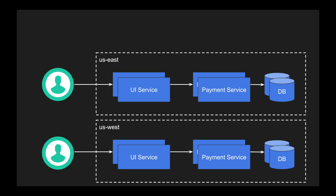Now the architecture looks amazing, but there are some complexities we need to understand and mitigate before getting this architecture into production. The first basic problem is how do we handle requests — there are two different deployments, four different instances of UI service, four different instances of payment service, and the database. How do we redirect requests? The second major problem is data consistency — how will I make sure the data in US East is in sync with the US West data?